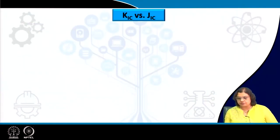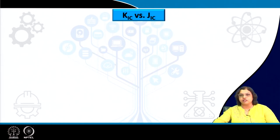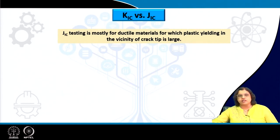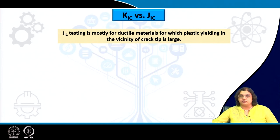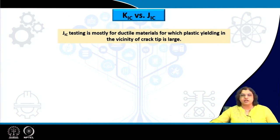Moving on to the next part, let us see how K1c is different from J1c. J1c testing is mostly used for ductile materials where there is a significant amount of plastic yielding at the vicinity of the crack tip — so large that the plastic zone size is almost equivalent to or greater than the thickness of the specimen.